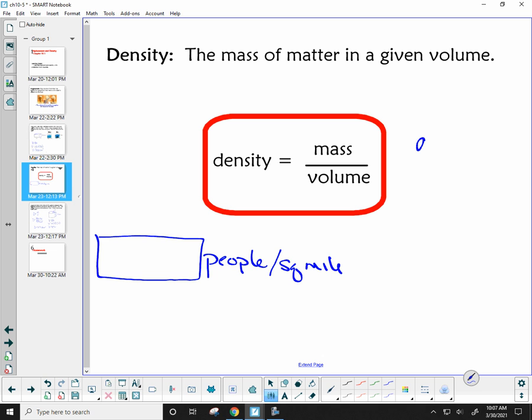Mass is going to be typically in grams. Volume is typically in cubic centimeters, cubic inches, cubic whatever. So if you're in doubt, think about your unit analysis. What would have to go in the numerator if I wanted there to be grams? What would have to go in the denominator if I wanted there to be cubic centimeters? Does that make sense?